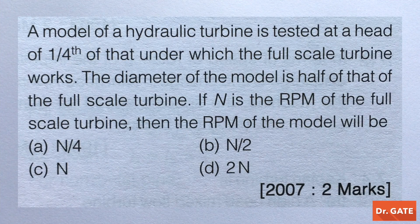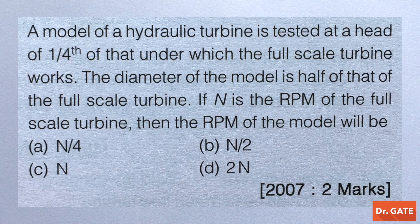Let's solve another numerical. A model of a hydraulic turbine is tested at a head of one-fourth of that under which the full-scale turbine works. The diameter of the model is half that of the full-scale turbine. If N is the RPM of the full-scale turbine, then the RPM of the model is to be found.